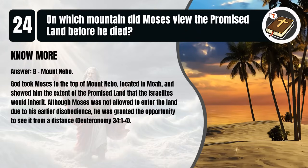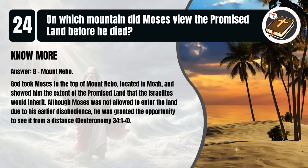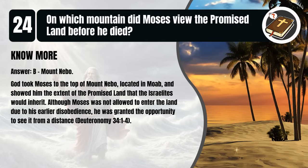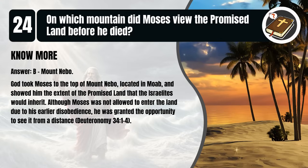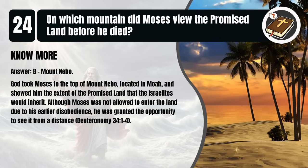That's B. Mount Nebo. God took Moses to the top of Mount Nebo, located in Moab, and showed him the extent of the promised land that the Israelites would inherit. Although Moses was not allowed to enter the land due to his earlier disobedience, he was granted the opportunity to see it from a distance. Deuteronomy 34:1-4.